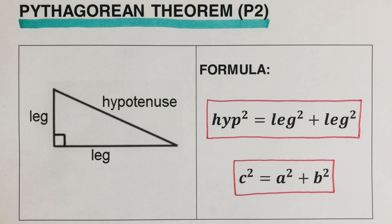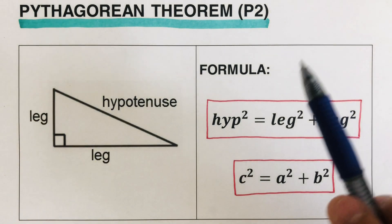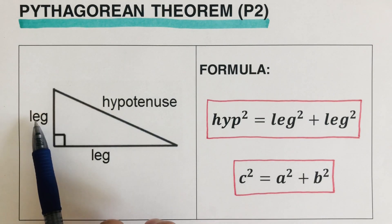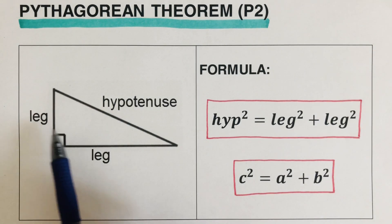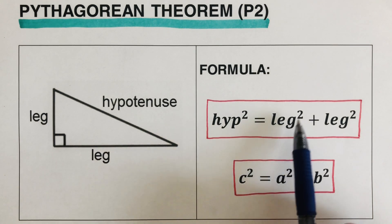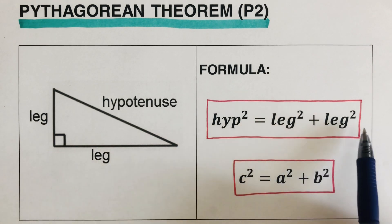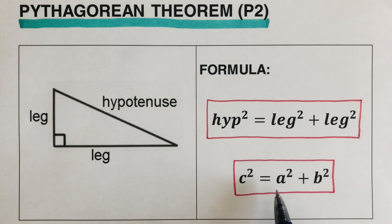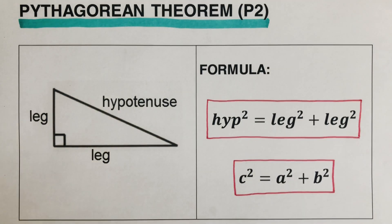It's pretty much the same thing. The formula for the Pythagorean theorem is: the square of the hypotenuse is equal to the sum of the two squares of the two legs. So hypotenuse squared equals leg squared plus leg squared, or as written in our textbook, c squared equals a squared plus b squared.